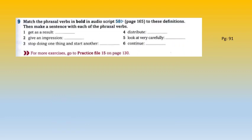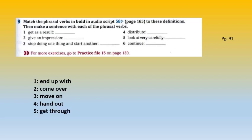Another exercise on the same page relates to the phrasal verbs highlighted in the text. Go back to page 91, find the phrasal verbs, check their meanings — this exercise is always very important for the exam. Match them and then check your answers. The answers are: 'give/get as a result' = end up with. 'Give an impression / seem' = come over. 'Stop doing something and start another' = move on. 'Distribute' = hand out. 'Look at something very carefully, look at the details' = get through. 'Continue' = carry on.